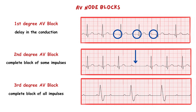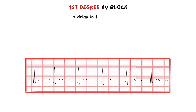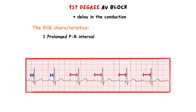First degree AV block is characterized by a delay in the conduction of the impulse in the AV node. This prolongation of conduction on ECG is shown as a prolonged PR interval. When the impulse reaches the AV node, the conduction is slowed down, and on the ECG this is presented with a flat baseline — a pause after the P wave. Since there is a block in the AV node, the conduction is even more slowed down, so this pause in the conduction lasts even longer.